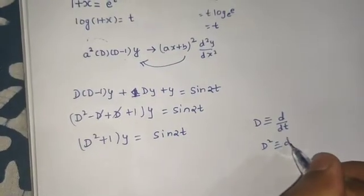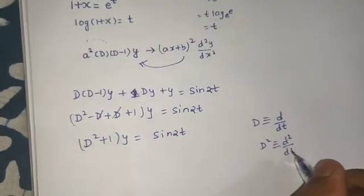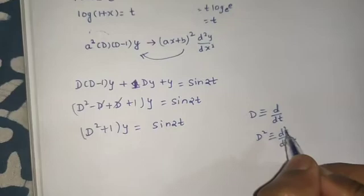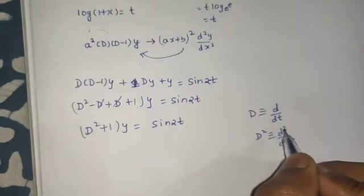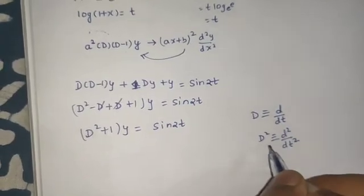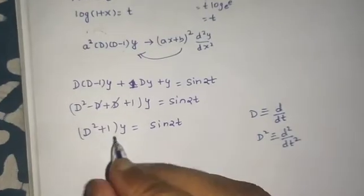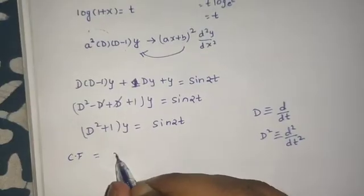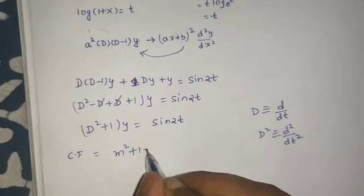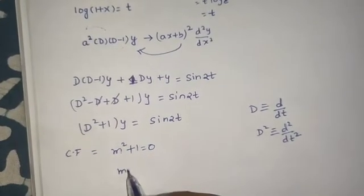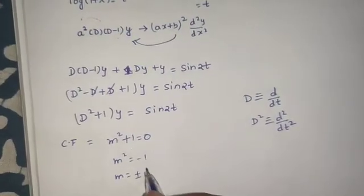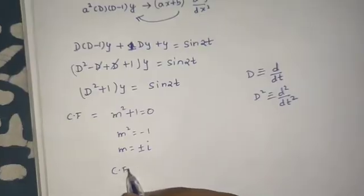d² is d²/dt². So we will have to keep in mind that the independent variable has been shifted from x to t. Now finding the complementary function - again an easy task. We replace this d by m and equate it to 0, so m² = -1, m is plus minus i. We can write the complementary function as...